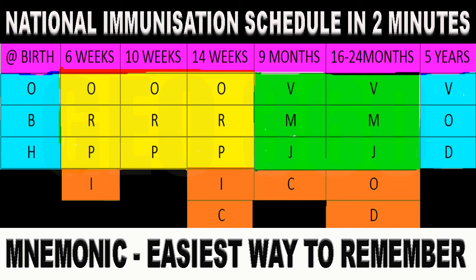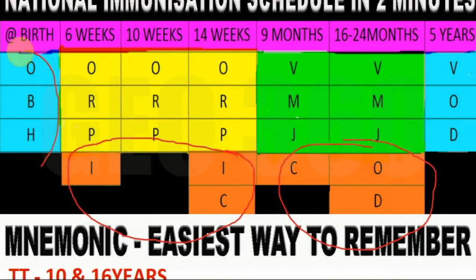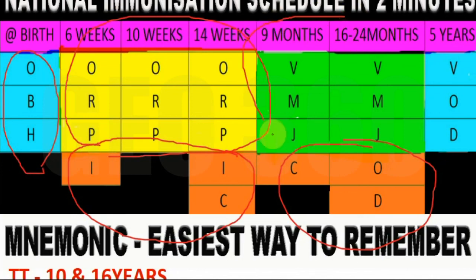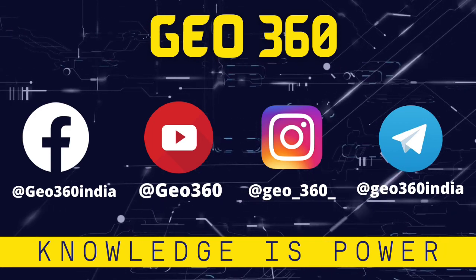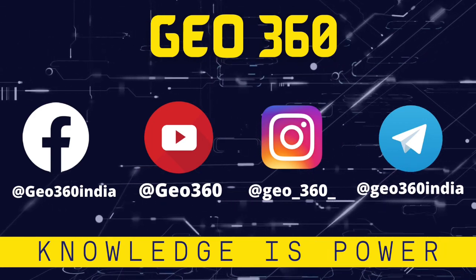I guess you won't forget it if you remember it this way. Just 4 or 5 words with their abbreviations: HBO at birth, PRO at weeks, VMJ at months, DAO at 5 years, IIC at weeks, and COD again at months. Hope this information will be very much useful and helpful for you in your practice and to help others remember the vaccination schedule. Share this video to the people who need it. Like, share, and subscribe to our channel and stay tuned for further updates. Thank you.